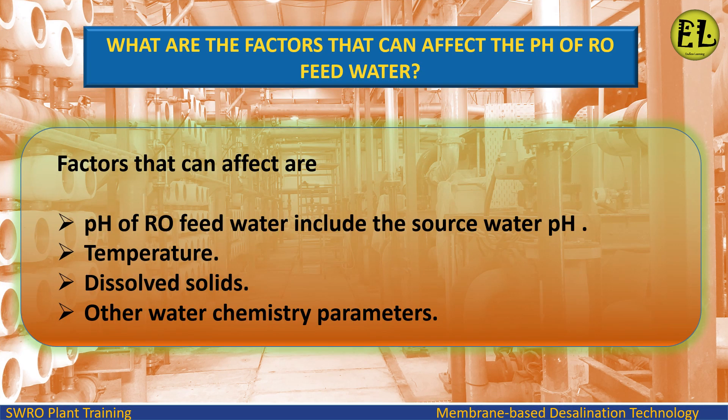What are the factors that can affect the pH of RO feed water? Factors that can affect the pH of RO feed water include the source water pH, temperature, dissolved solids, and other water chemistry parameters.